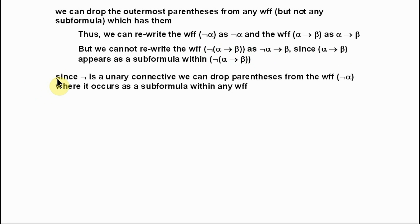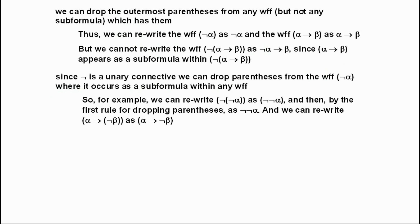The second of our rules for omitting parentheses: since the negation symbol is a unary connective — that is, it stands in front of just one wff — we can drop parentheses from the expression open paren, negation alpha, close paren, wherever it appears. Not just as a complete wff where the first rule already applies, but even where this appears as a subformula, we can drop those parentheses. So, for example, we can write this expression dropping the inner parentheses, because negation is a unary connective.